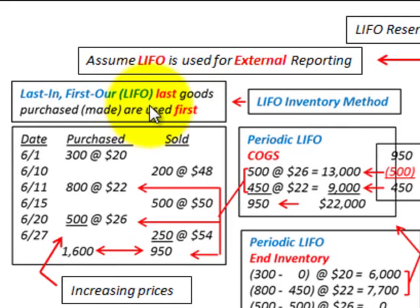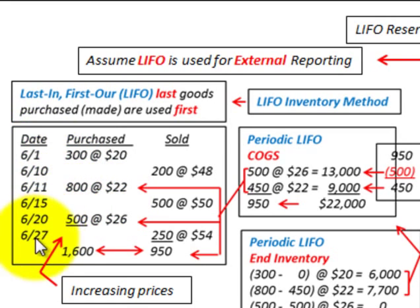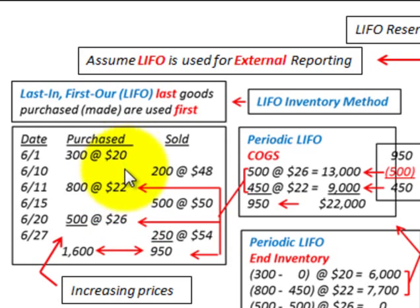Just to go through our basic example here: LIFO refers to last in, first out — the last goods purchased or made are used first. We're going to have some purchases listed in ascending order, with older purchases on top and the most recent purchases on the bottom. We'll also have some sales against these purchases, and we just want to look at our ending inventories.